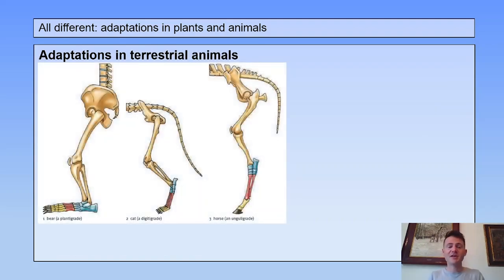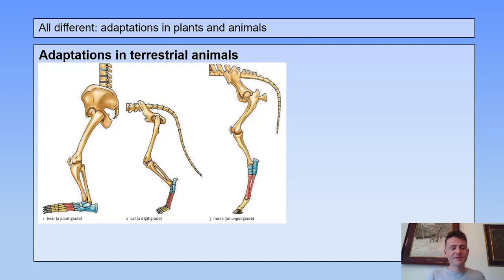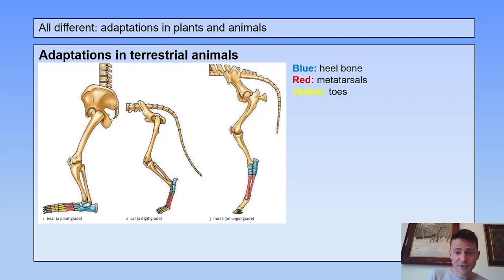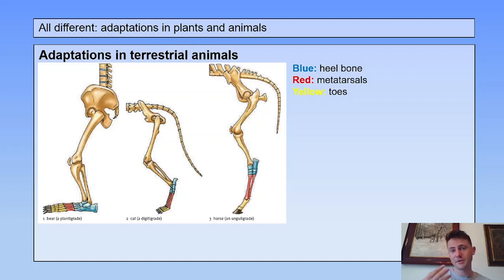When you look at terrestrial animals, you see that the feet of different kinds of animals are also adapted to their environment. You can see a few bones colored: the blue bones are the heel bones, red are the metatarsals, and yellow are the toes. There are similarities in the bones, but the bones have adapted to different surroundings.